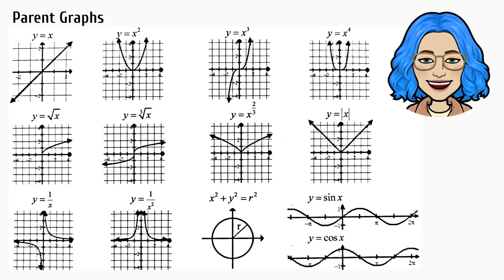A parent graph is the graph of a relatively simple function. By transforming the parent graph in various ways, the graph can be translated, reflected, or otherwise changed. Algebra 2 Trig is all about functions, or relationships between x and y, including their inverses. It is very important that you memorize the general shape of each of these parent graphs, so we can better understand characteristics of the graph and the effects of its transformations.